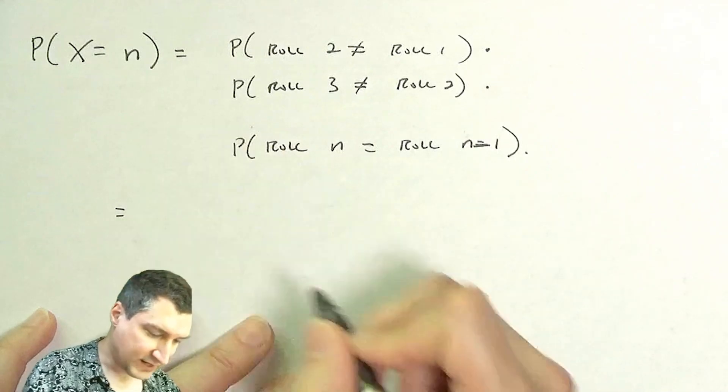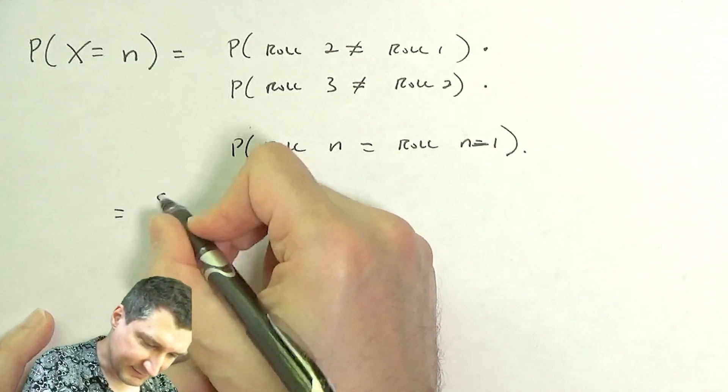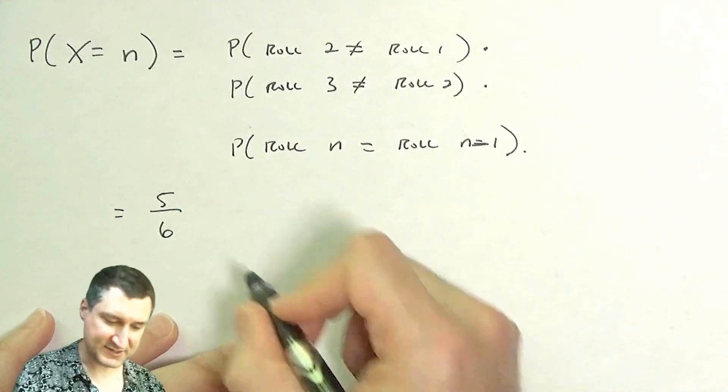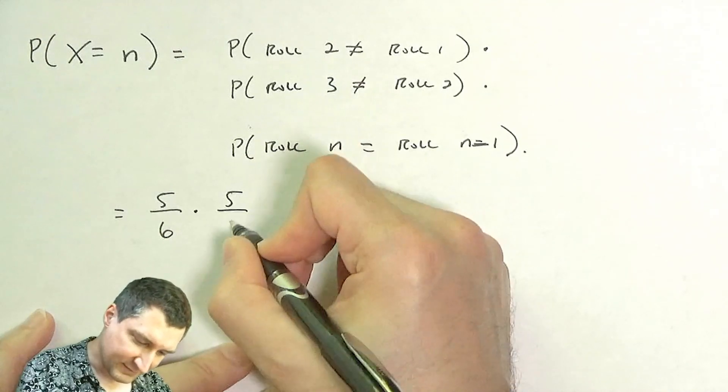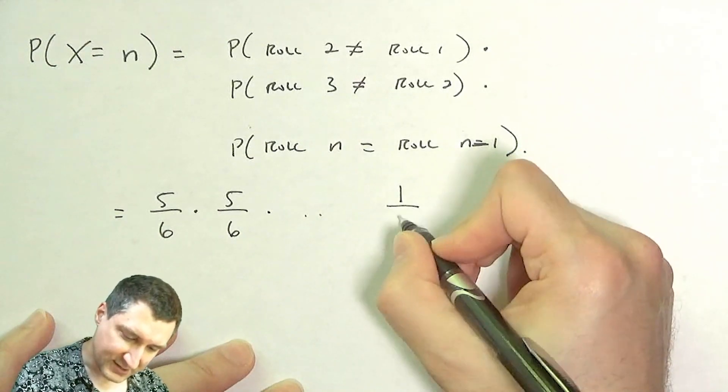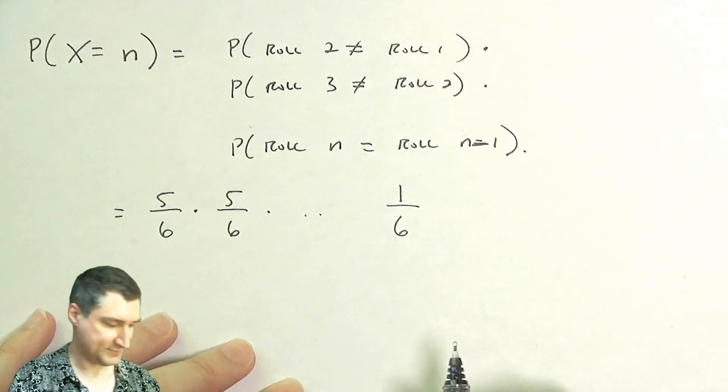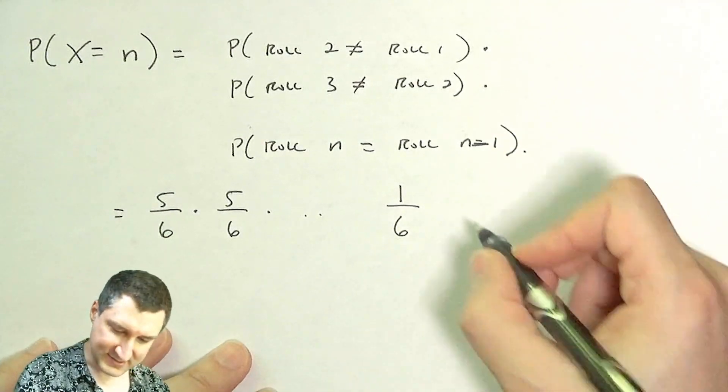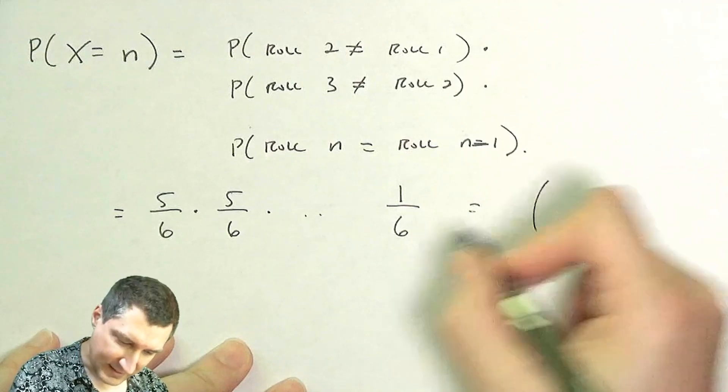The probability of the first thing happening—failing on roll 2—is 5/6, then I have failing on roll 3 is 5/6, dot dot dot, all the way up to succeeding on roll n.